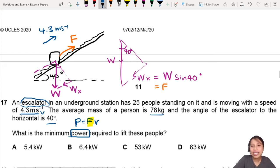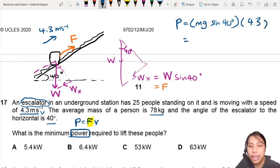Now, we can do some calculations. So, that P equals force times velocity. So, our force here will be W sine 40, so Mg sine 40, times the velocity in which everyone is travelling at. So, 4.3 meters per second. Mass. What is the mass, the total mass?